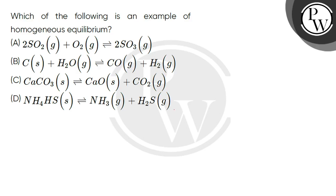Hello students, let's solve this question. The question says which of the following is an example of homogeneous equilibrium? Four options have been given. You have to tell which is homogeneous equilibrium. Now, homogeneous equilibrium is the situation in which your reactant and product is in the same phase, either all solids or all liquids or all gases.